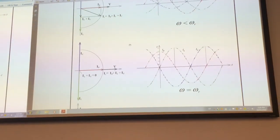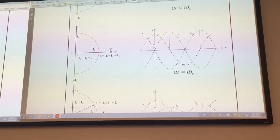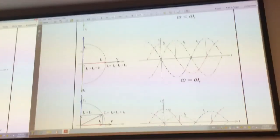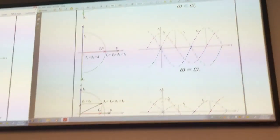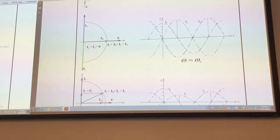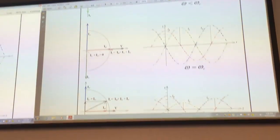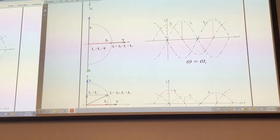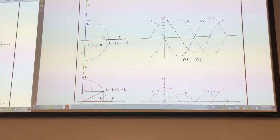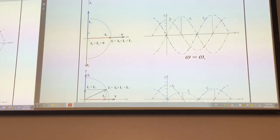So for omega equal to omega r, the resonant frequency, on the phasor plot here, voltage and current are in phase, and current in the resistor are in phase. And currents in capacitor and in inductor have the same magnitude but opposite phasors.